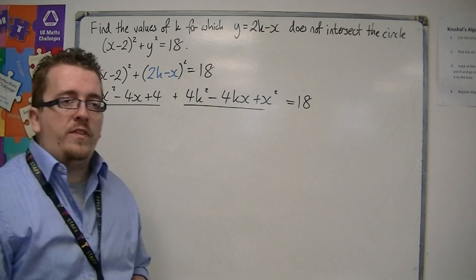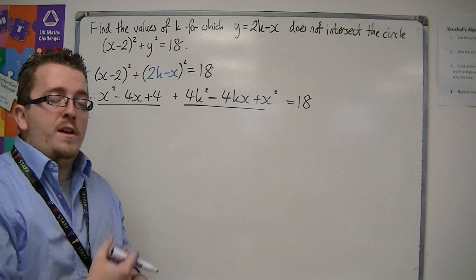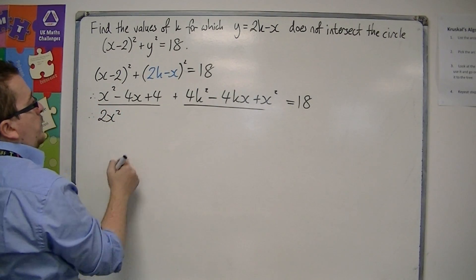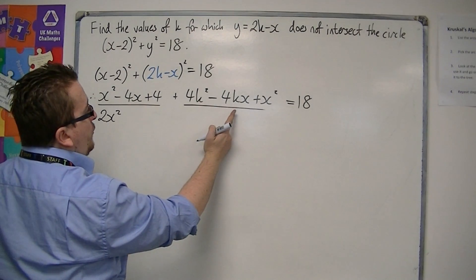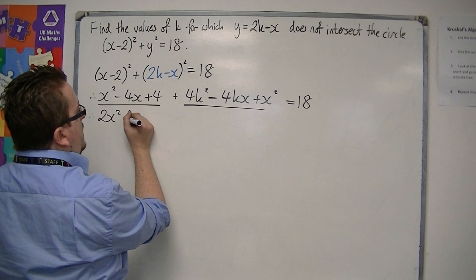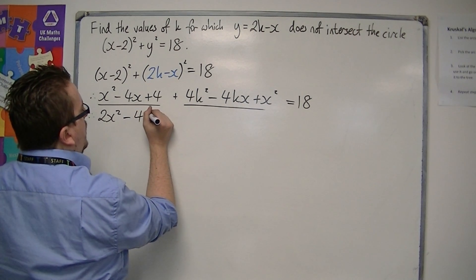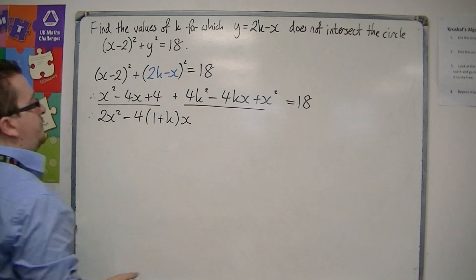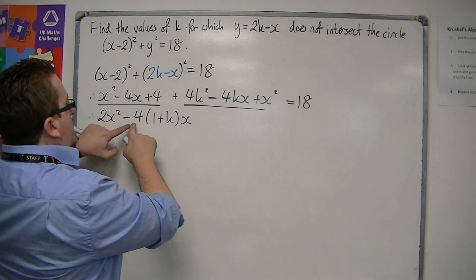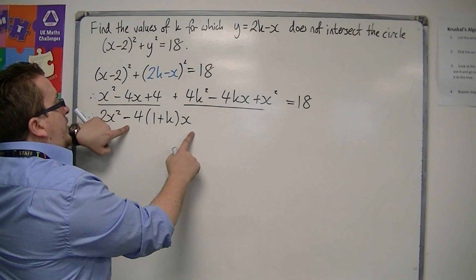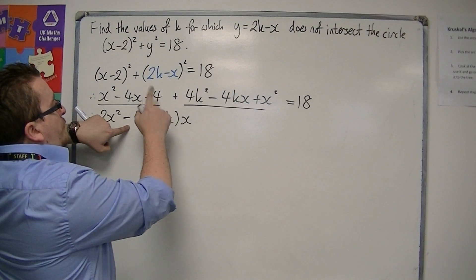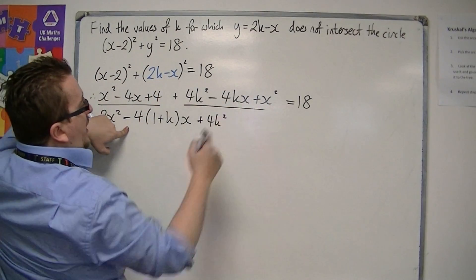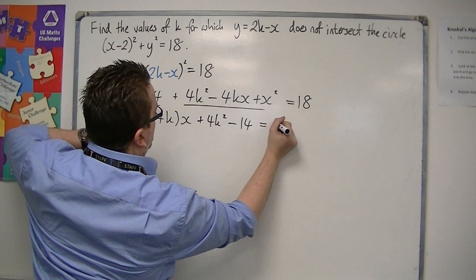We then rearrange everything, getting everything on the left-hand side and grouping like terms together. x squared plus x squared gives 2x squared. We've got minus 4x and minus 4kx, which I'm going to factorise as minus 4 lots of (1 plus k)x, because that gives the minus 4x and the minus 4kx. And then we have 4k squared, and 4 take away 18 is minus 14, all equal to 0.